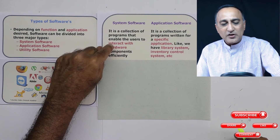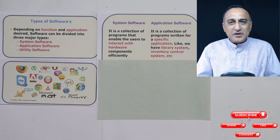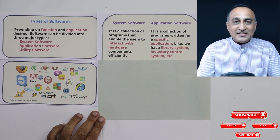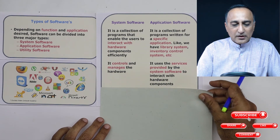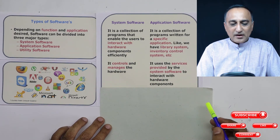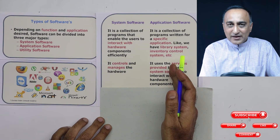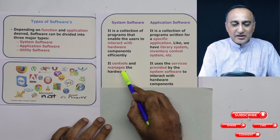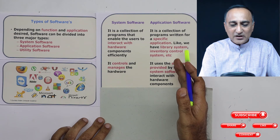System software allows users to get work done from the hardware. A library system, for example, keeps records of books, tracks issuing and purchasing — but when designing it, you're not worried about the hardware it runs on. System software controls and manages the hardware, whereas application software does not directly control or manage the hardware. Application software merely uses the services provided by the system software to work with the hardware components.